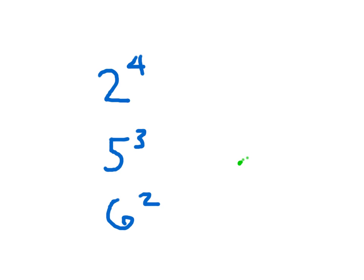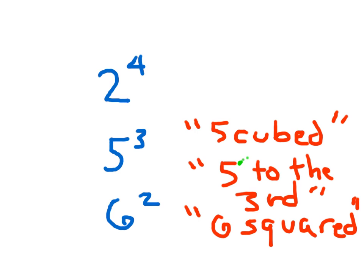What do you think we say for this 2 here? We can call it 6 squared. So when the exponent is 3, we say cubed. And when the exponent is 2, we say squared. This one was 2 to the 4th. These two down here are special, in that we can say something else besides 5 to the 3rd — we can also say 5 cubed. And for this one, 6 squared.